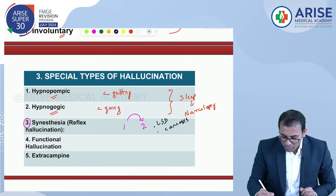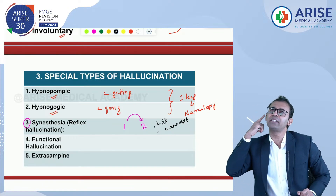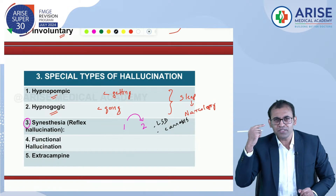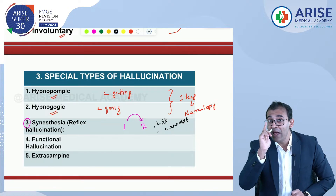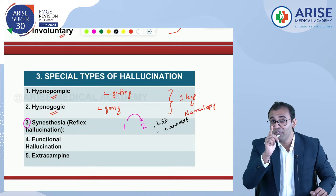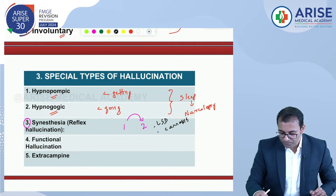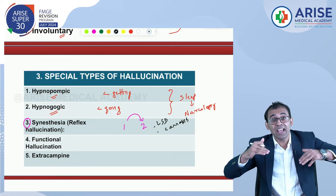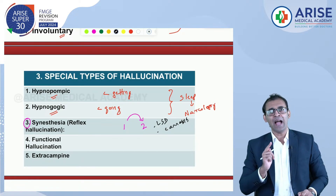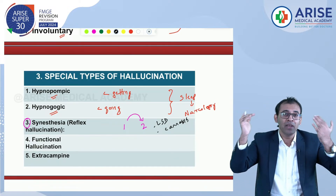Functional hallucination is when a stimulus in one modality produces hallucination in the same modality — for example, hearing a clock ticking and then hearing voices of God (auditory stimulus, auditory hallucination). Extracampine hallucination is seeing beyond the sensory field — a patient claims to see someone standing beyond a wall.